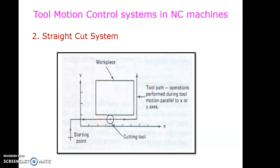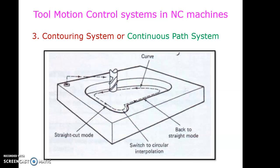This is called the straight cut system, and a typical example is an end milling operation or any milling operation. The third tool motion control system is the contouring system, or continuous path system. This system involves complex geometry or complex contours of work pieces, making it the most difficult and sophisticated control system for tool motion.